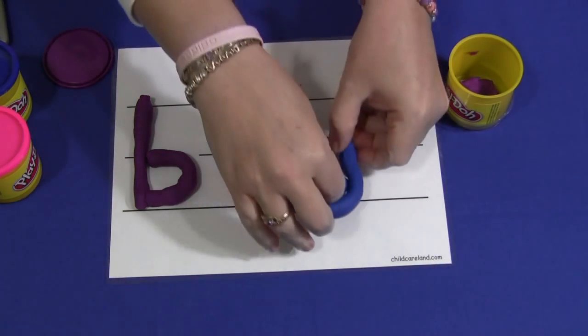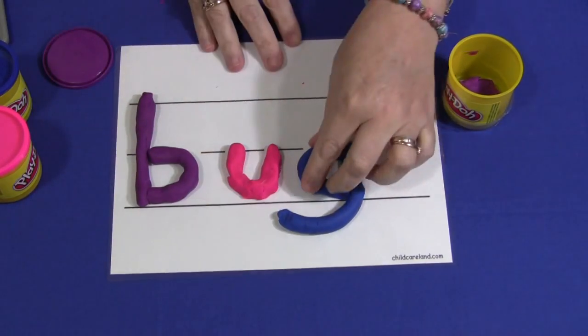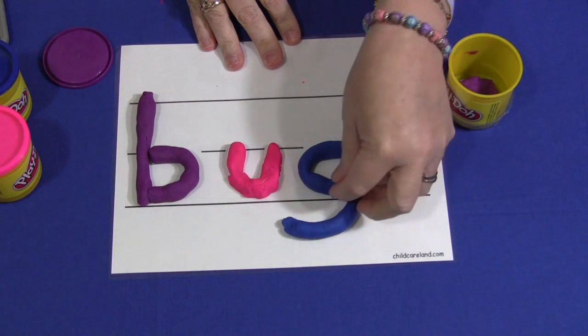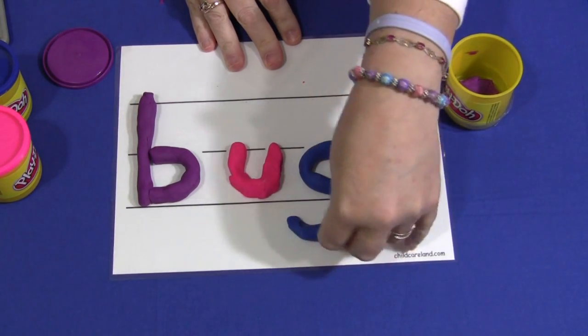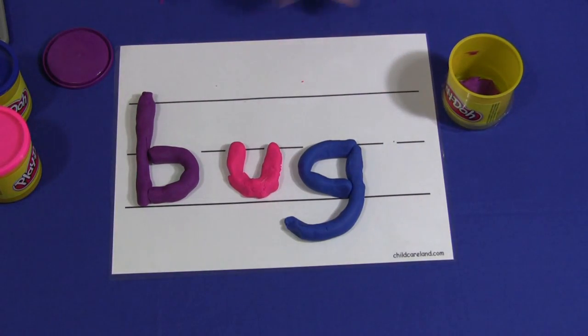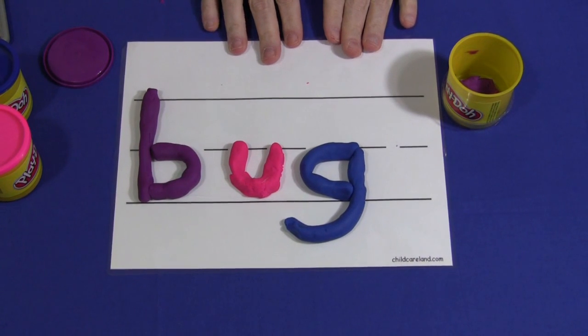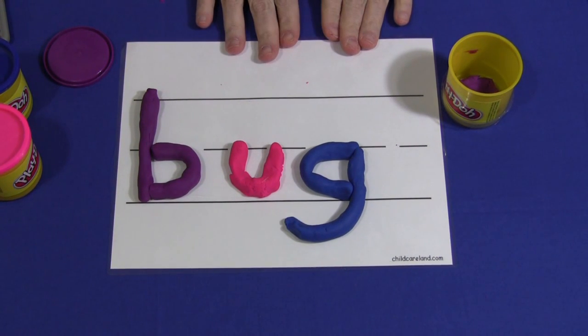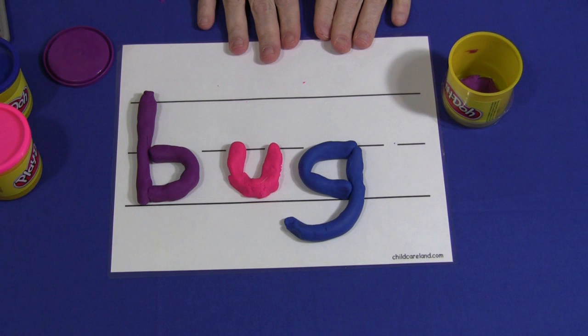I already have this one made up just like so. Again you could do letters, you could do sight words, you could do names for name recognition for both the children and their friends. There's a whole bunch of different things you could do with this.